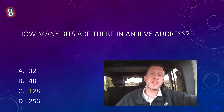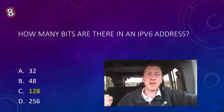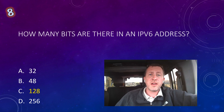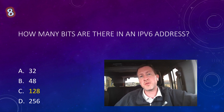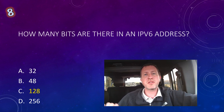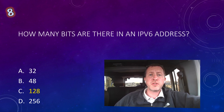Question eight: How many bits are there in an IPv6 address? IPv4 addresses have 32 bits, but we're not looking for IPv4. MAC addresses have 48 bits, but that's not IPv6 either. There are 128 bits in an IPv6 address, so option C is the correct answer. Option D, 256 bits, is used for some types of encryption but not IPv6. The answer is 128 bits, option C. Let's move on to question number nine.